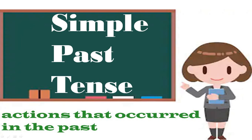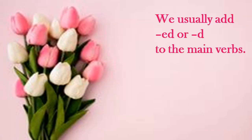Simple past tense always denotes the actions that occurred in the past. The actions that have already been completed — for those we use simple past tense. Now, there are a few rules that you have to keep in mind. We usually add -ed or -d to main verbs to make simple past tense. For example, wash → washed. Present form is wash and past form is washed.